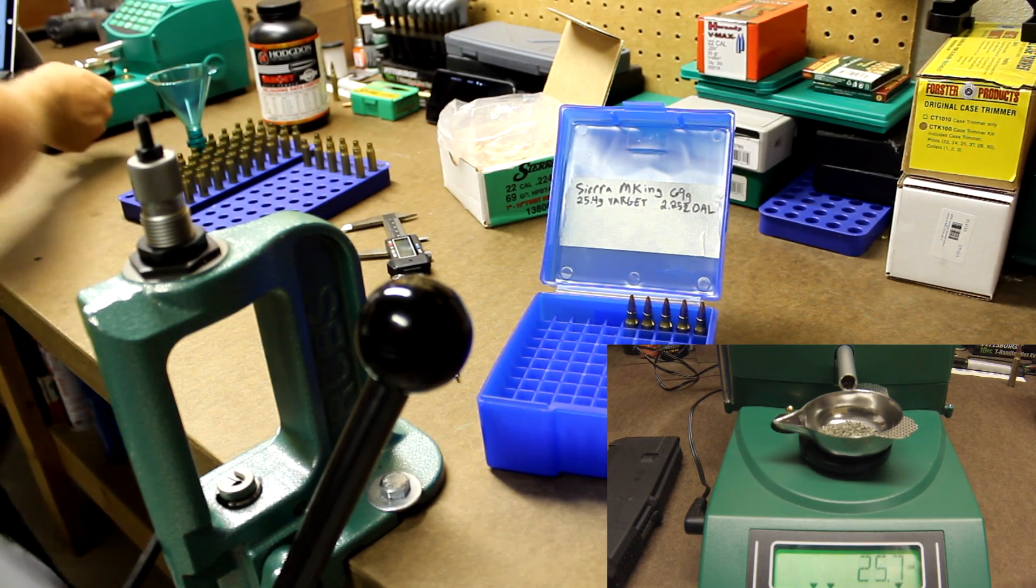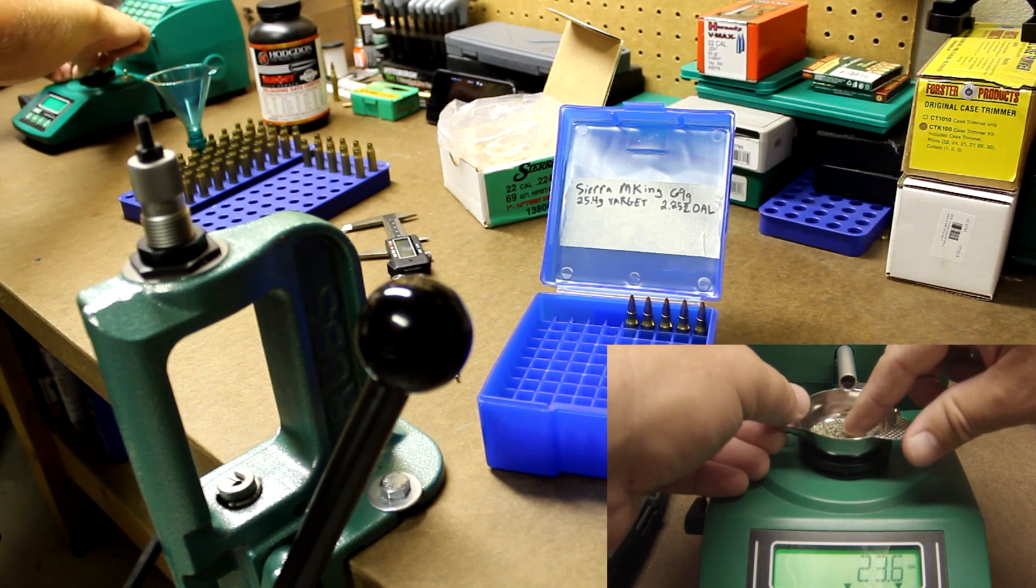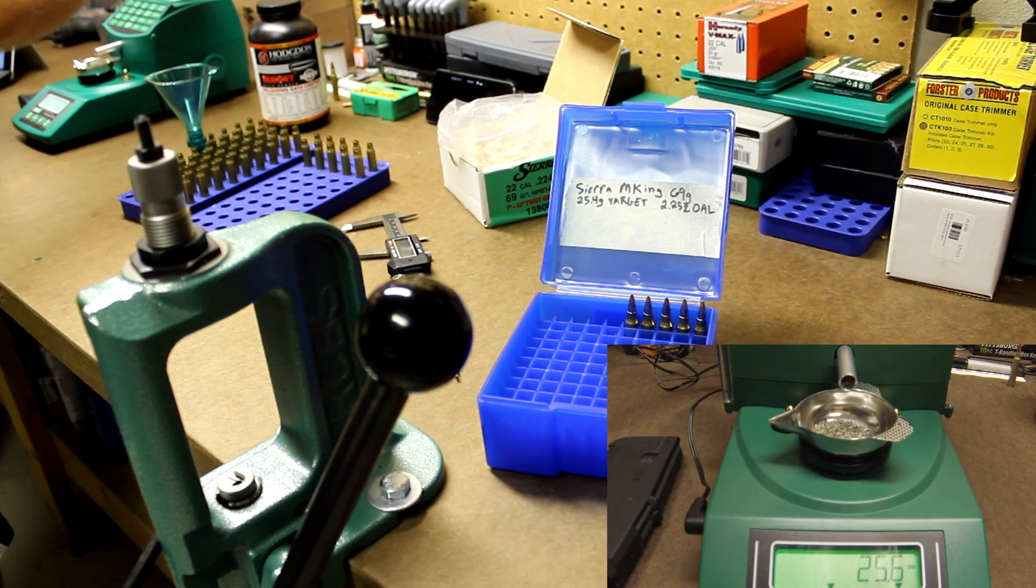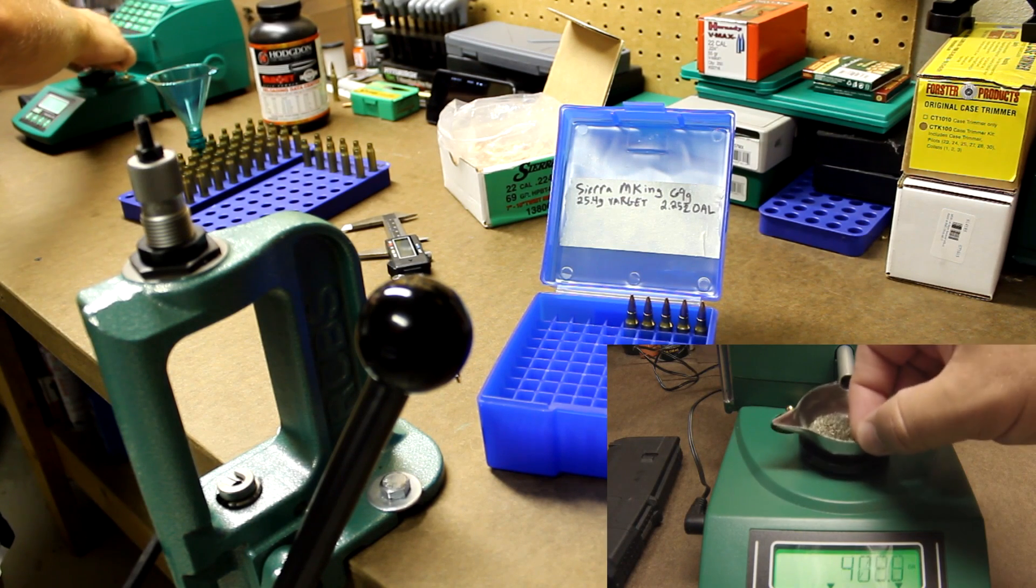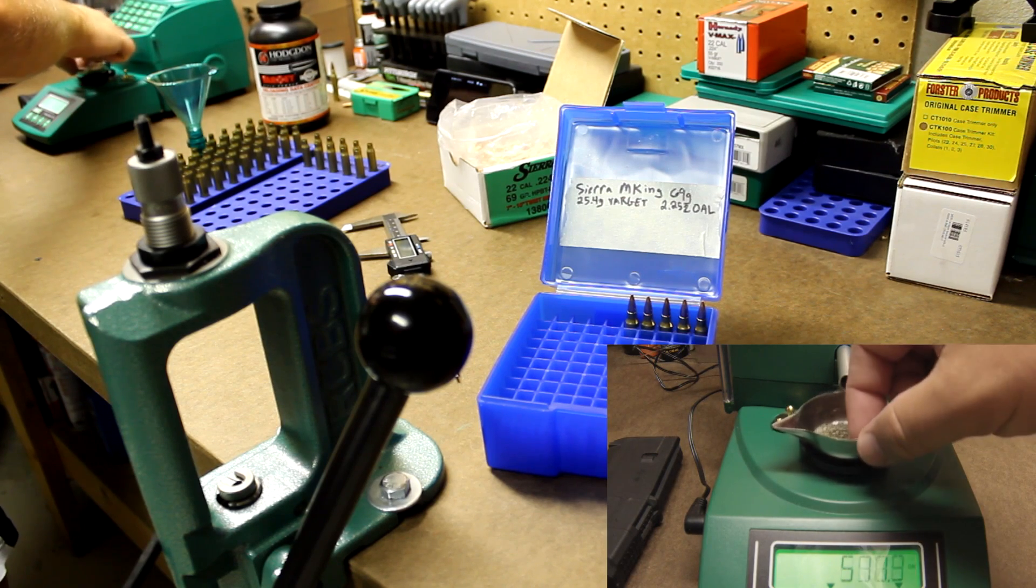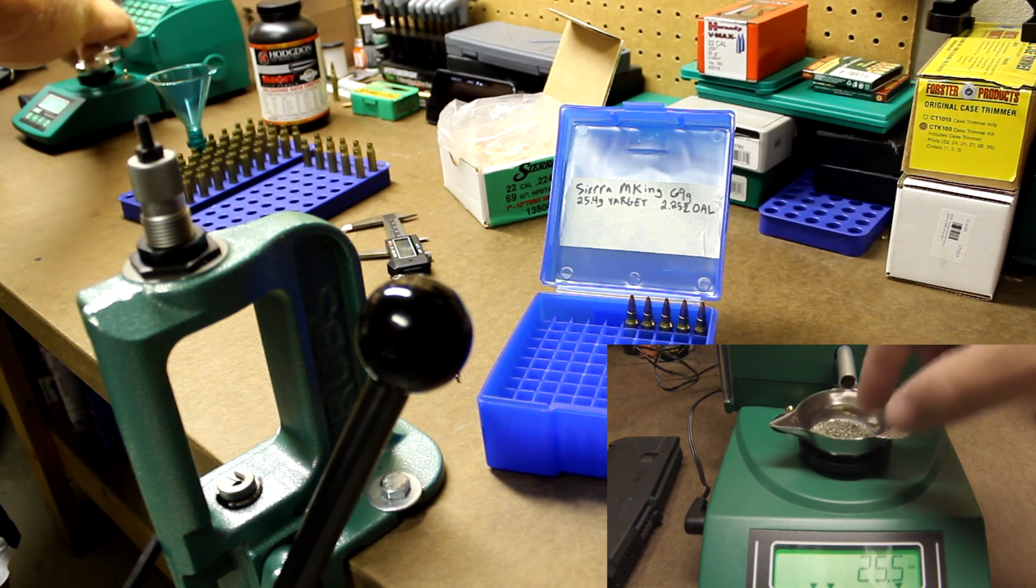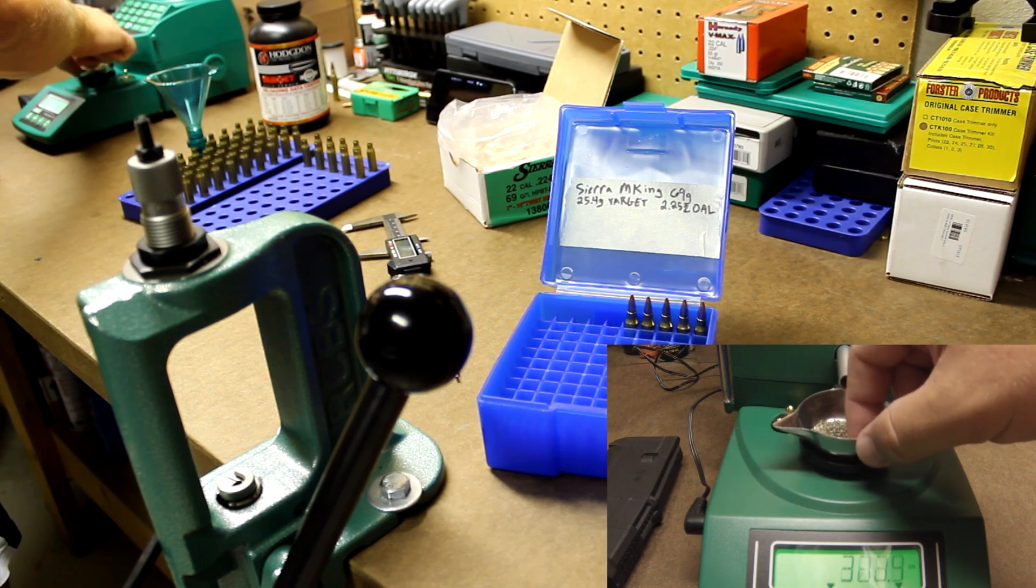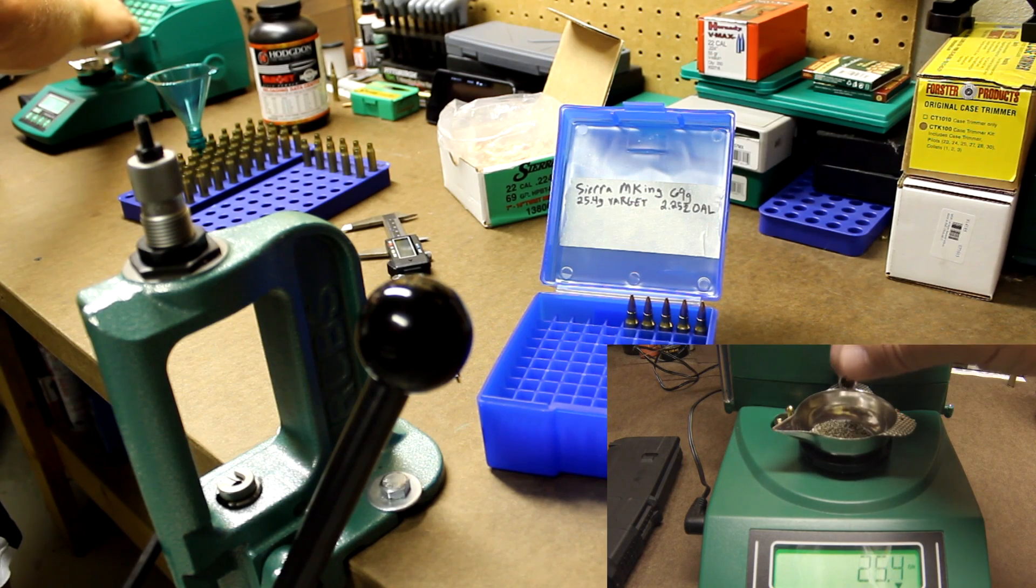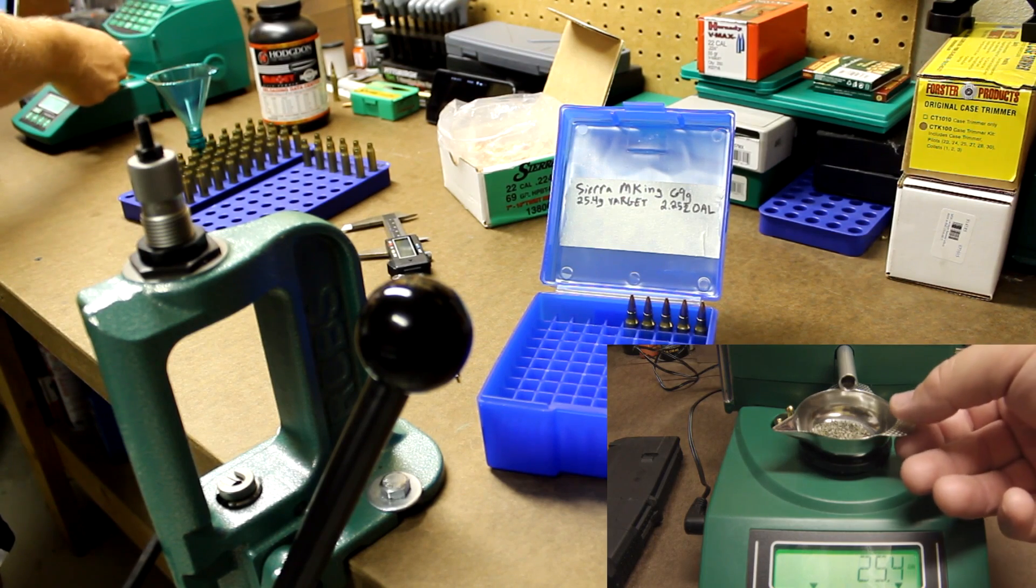See this one's a little bit heavy, 25.7. So what I'll try to do here is grab a couple of these granules and dial it to 25.4. With these, usually one kernel is one tenth of a grain. There you go, 25.4.